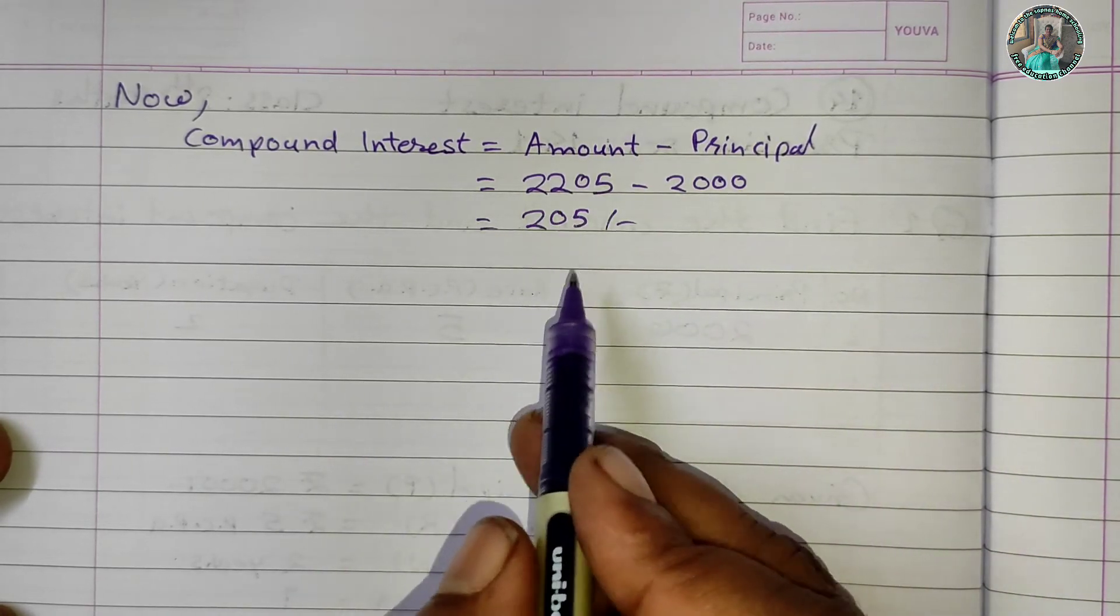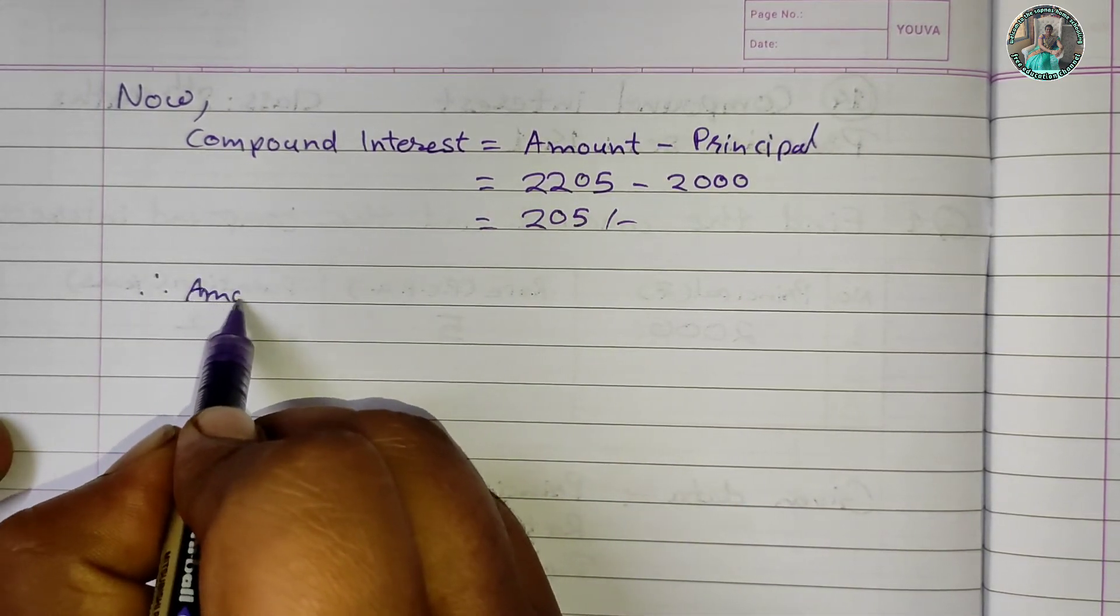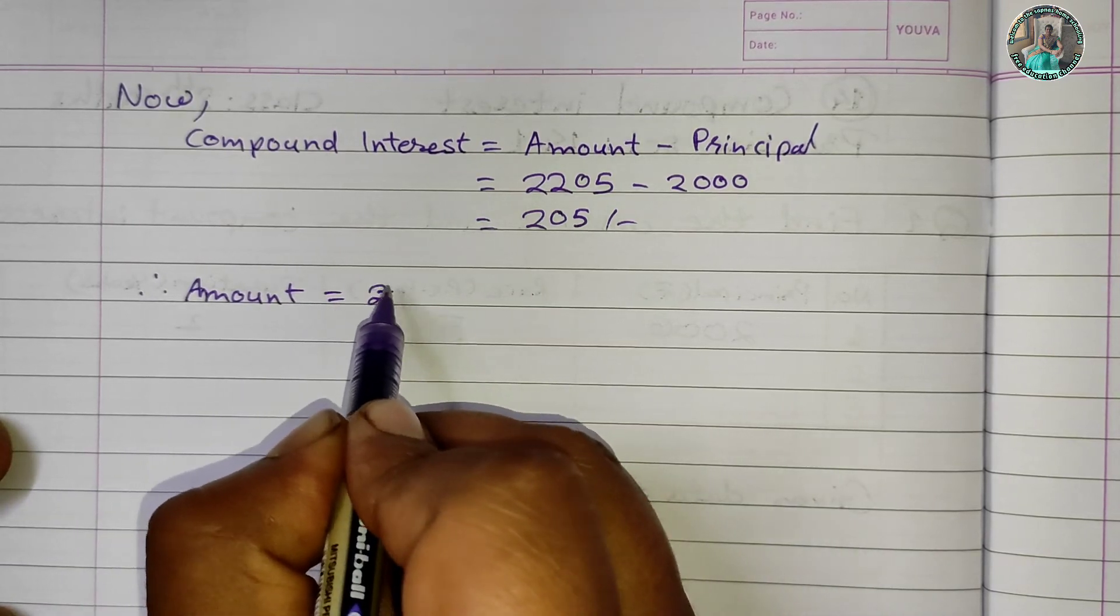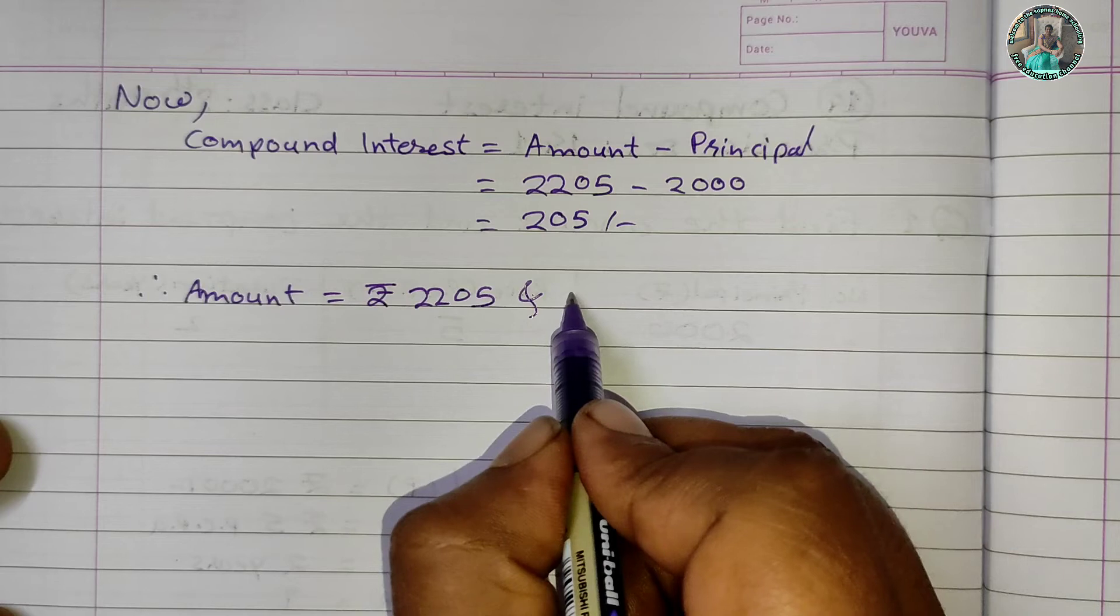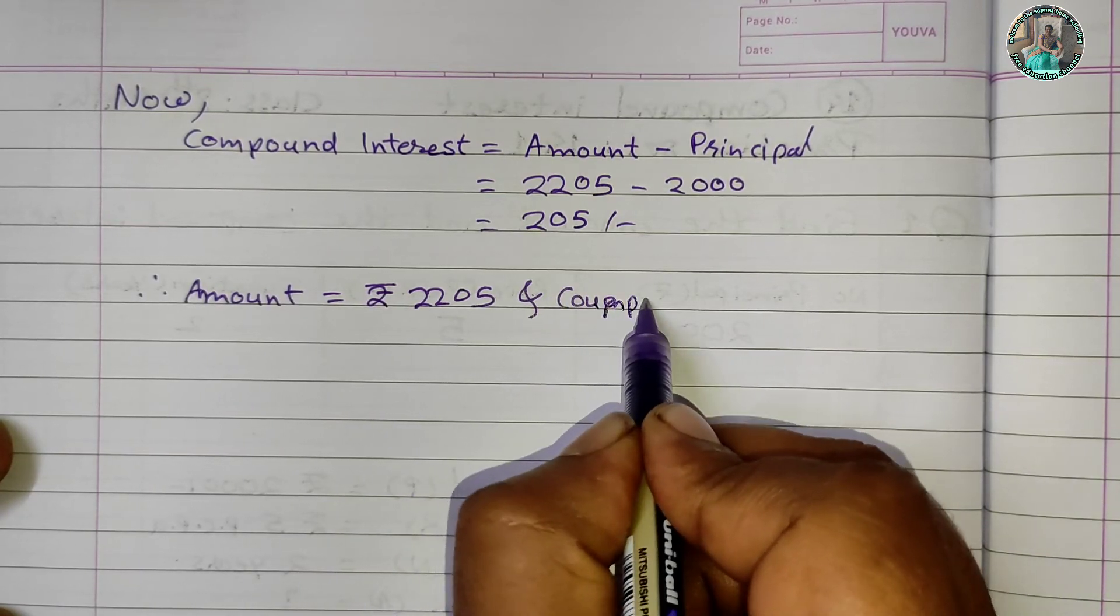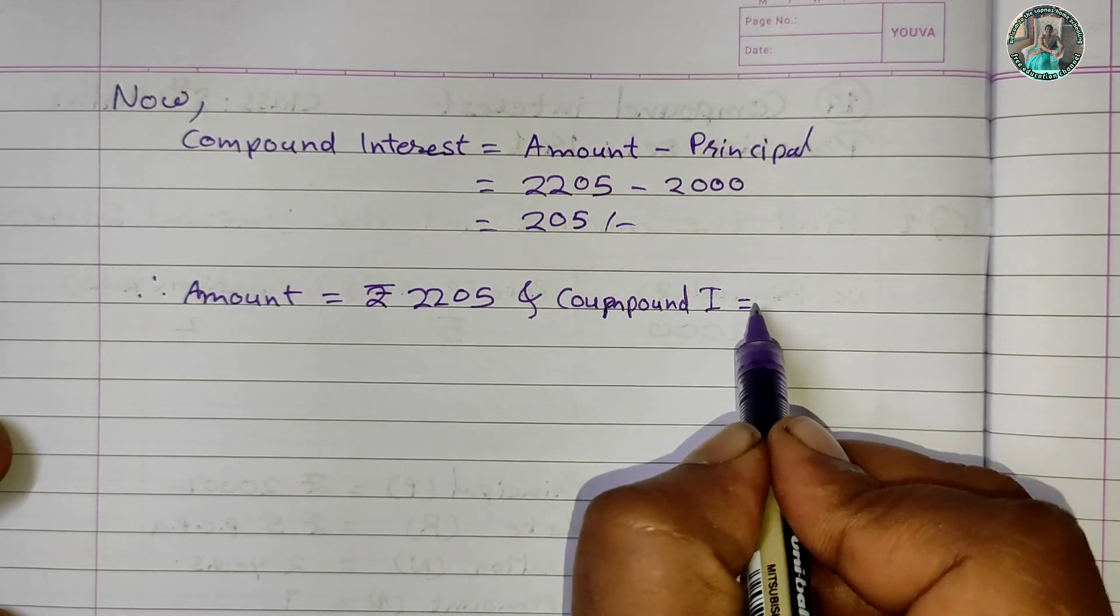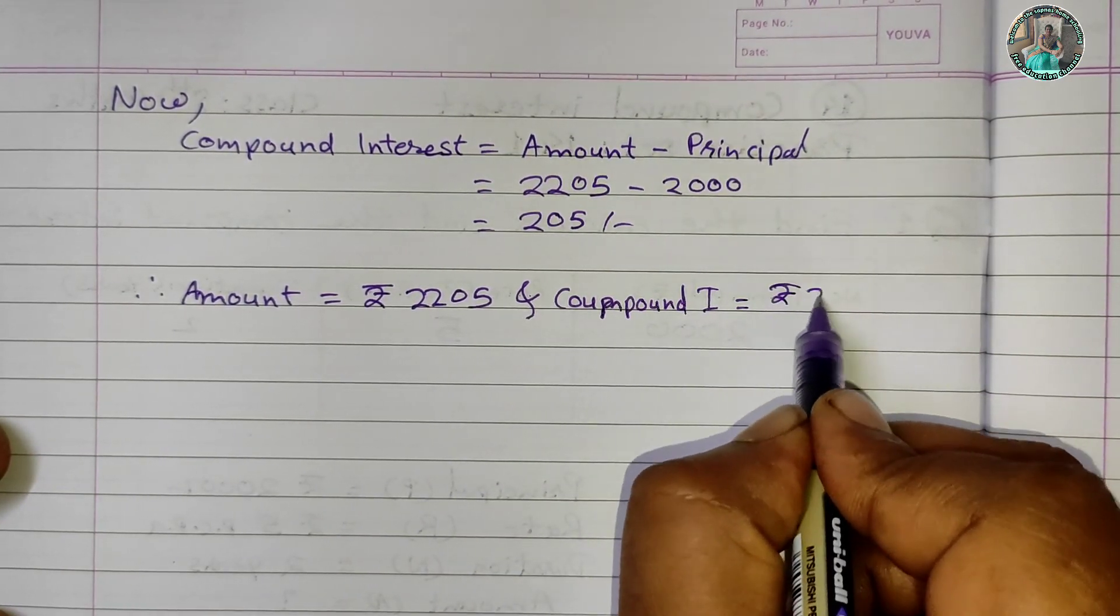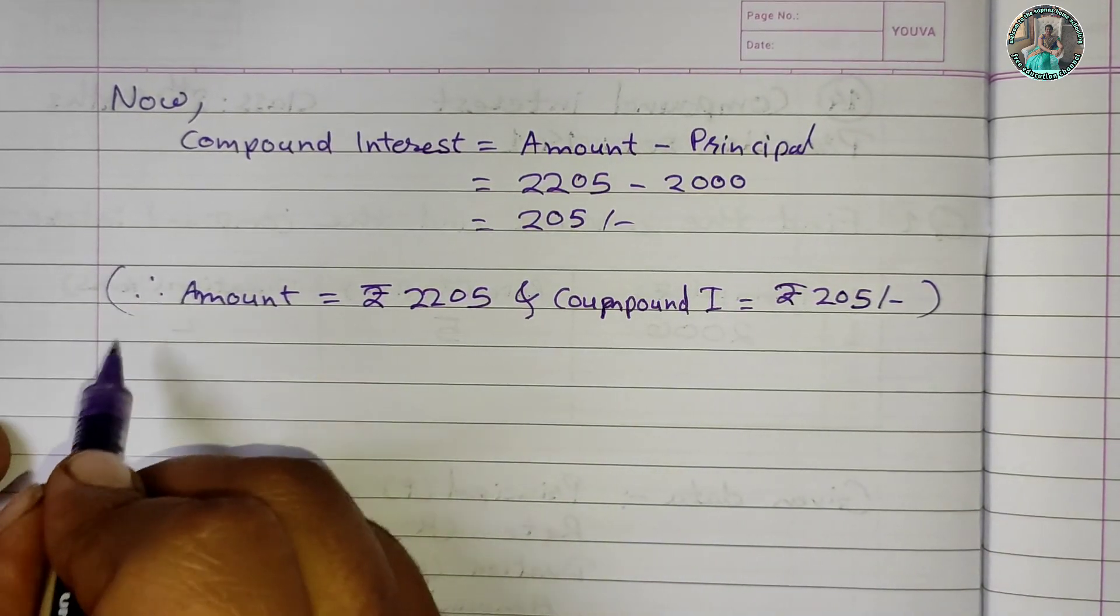Therefore, amount is equal to Rs. 2205 and compound interest is equal to Rs. 205.